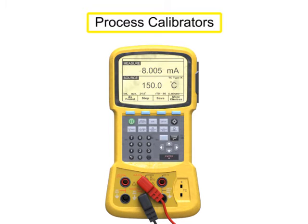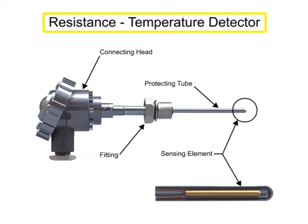Process calibrators are used by technicians to measure and calibrate sensors and transmitters. Using an RTD, or Resistance Temperature Detector, as an example, the initial step of calibration is verifying the accuracy of the temperature-sensing device.